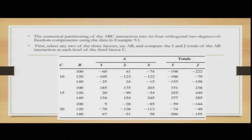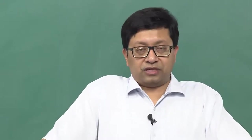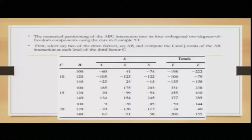The numerical partition of the ABC interaction into its four orthogonal 2-degrees-of-freedom components uses the data from Table 9.1 — speed, pressure, and nozzle dimension — to find the frothing and syrup loss. First, select any two of the three factors (pressure, speed, and nozzle dimension), compute the values of i and j, representing the total of the AB interaction at each level of the third factor C.